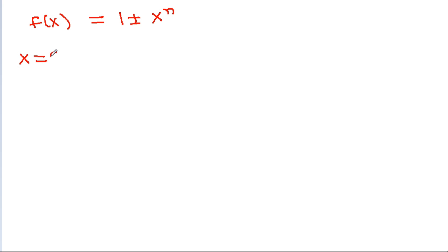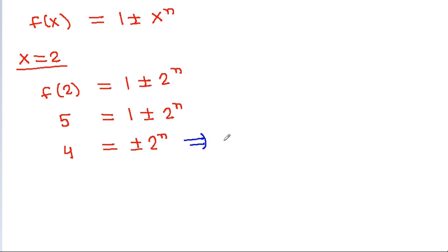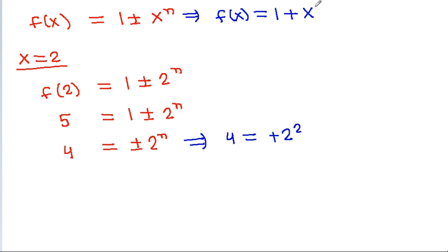At x equal to 2, f(2) will be equal to 1 plus or minus 2 to the power n, and f(2) equals 5, so 5 equals 1 plus or minus 2 to the power n. Therefore plus or minus 2 to the power n equals 4. Since 4 equals positive 2 squared, f(x) will be equal to 1 plus x squared.